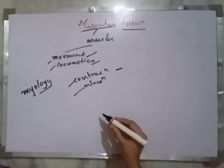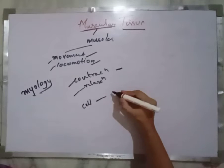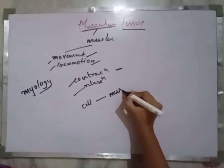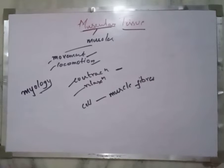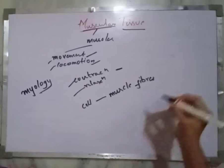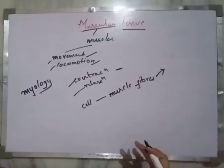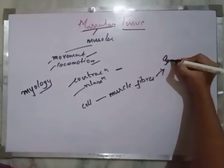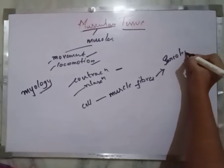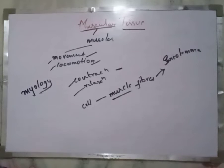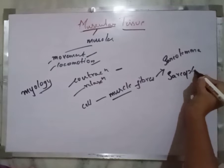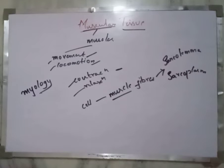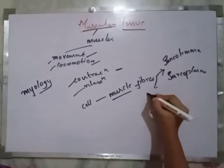A tissue is a group of cells. The cells of muscular tissue are called muscle fibers. These muscle fibers are surrounded by a plasma membrane known as the sarcolemma, and the cytoplasm of a muscle fiber is called the sarcoplasm. These muscle fibers also contain cells known as sarcosomes.